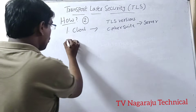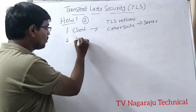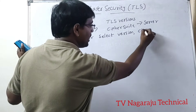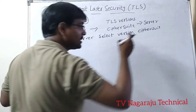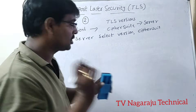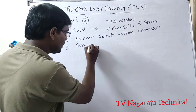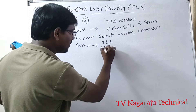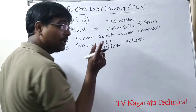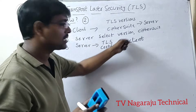Once the server receives this information, based on the options of the client, it selects the particular version of TLS and the cipher suite, and initiates the connection. Once the connection is initiated, the server immediately sends its TLS certificate to the client for authentication of the server.